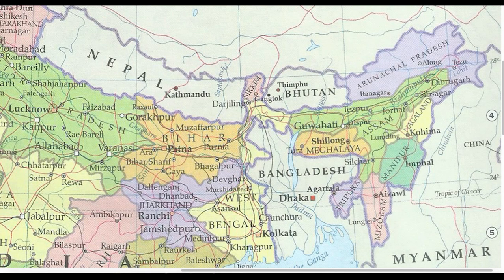Now let us look at the magnified view of this map of Northeast India. This is the map for the eastern part of India and the states we are concerned with are Sikkim, Arunachal Pradesh, Assam, Nagaland, Manipur, Mizoram, and Tripura along with Meghalaya — Sikkim and the seven sister states.